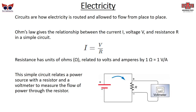Electrical circuits are the other option — electricity can also flow. Ohm's Law gives us the relationship between the three major factors for electrical flow: current (measured in amperes), voltage (in volts), and resistance (in ohms, symbol Ω). The current is always related to voltage divided by resistance. If you increase resistance, you decrease current. In a simple circuit, a power source drives electrons through a resistor, and we can measure the flow of power using a voltmeter to measure voltage across it.